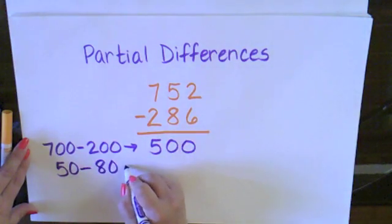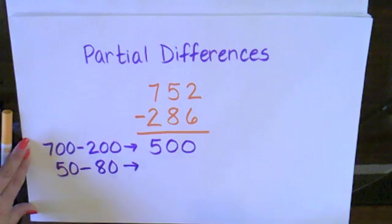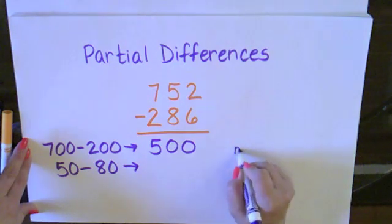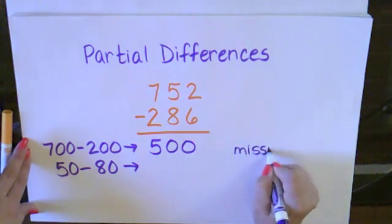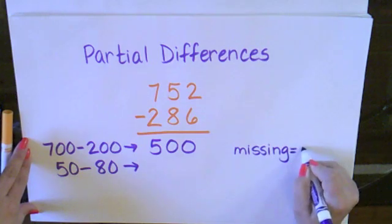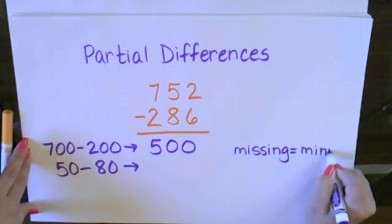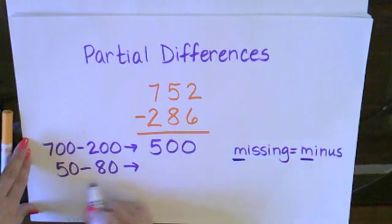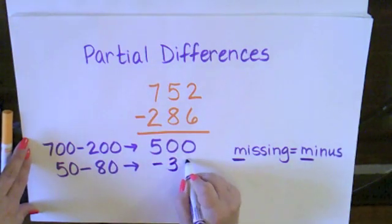If you think about 50 minus 80, think about it in terms of dollars. If I have $50 and I'm buying something that costs $80, I'm missing $30. So when I see missing, I want to think of it as minus. So I'm looking at missing minus. So I'm missing or minus 30.